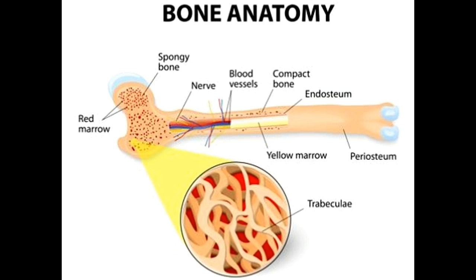Their porous nature helps to hold the bone marrow soft tissue that produces red blood cells. The tiny spaces or cavities of the bone also hold the nerves and capillaries that exchange nutrients in and out of the spongy bone.